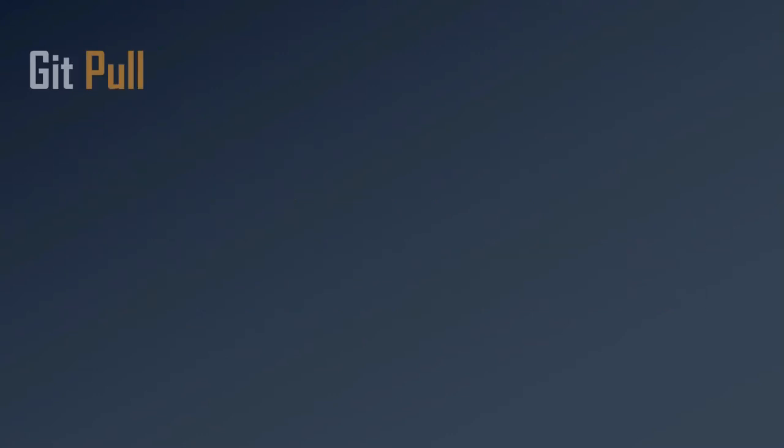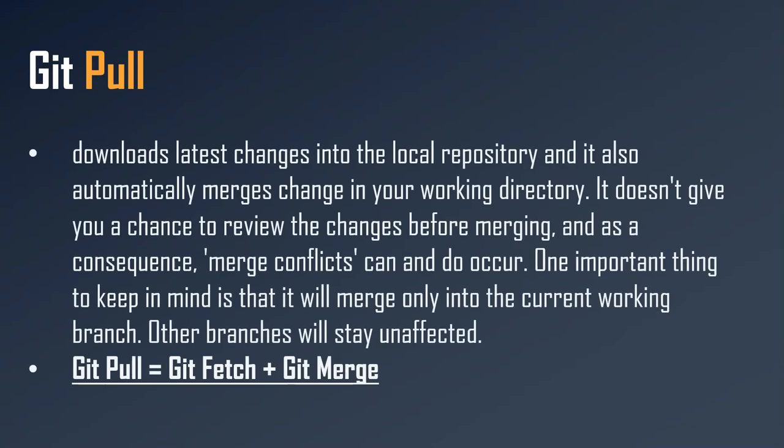Now let's see git pull. Git pull basically downloads the changes to our local repository and then automatically merges the changes to our working directory. As a consequence, a merge conflict will be possible. The important thing is that we can just merge the changes to our working branch — other branches will be unaffected.